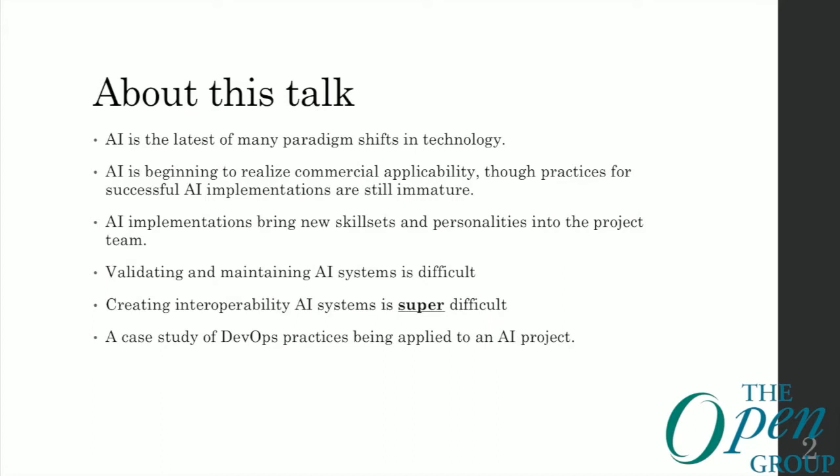AI systems are hard. But the reason that they're hard is for reasons that some of which are common, known problems in IT space, but some of which are novel problems, new to the AI domain. It's my belief and experience that if we look at some of the rich body of knowledge that DevOps practitioners have created, we'll have an opportunity to start to address some of these pitfalls.